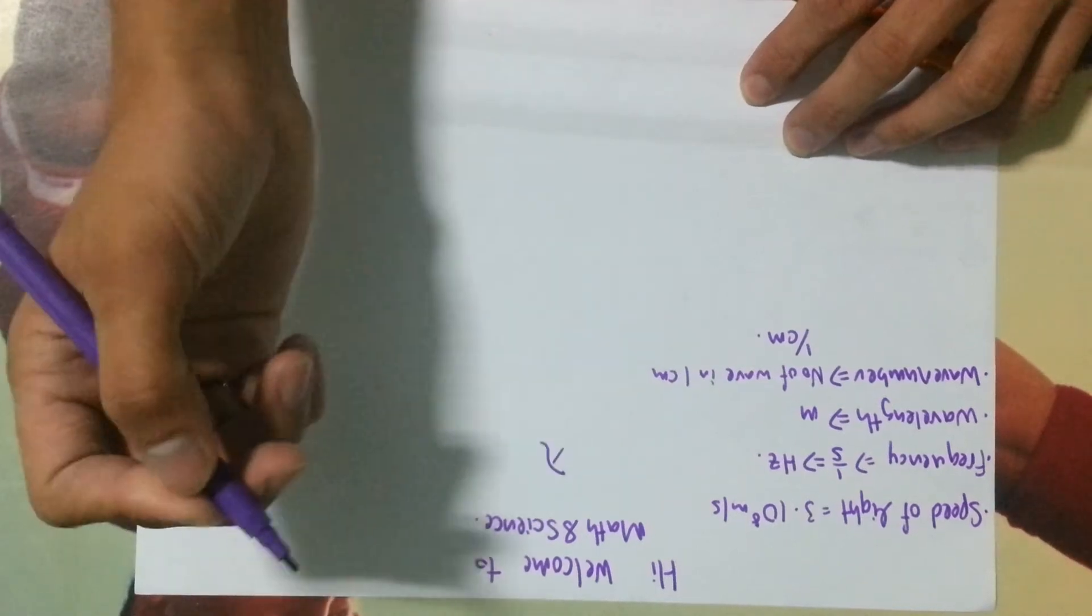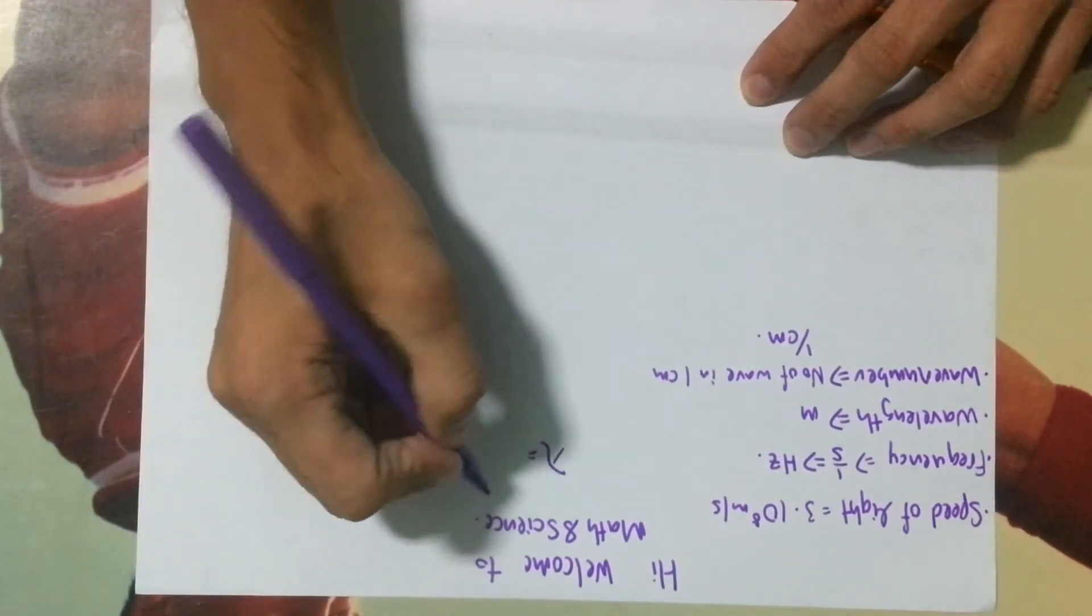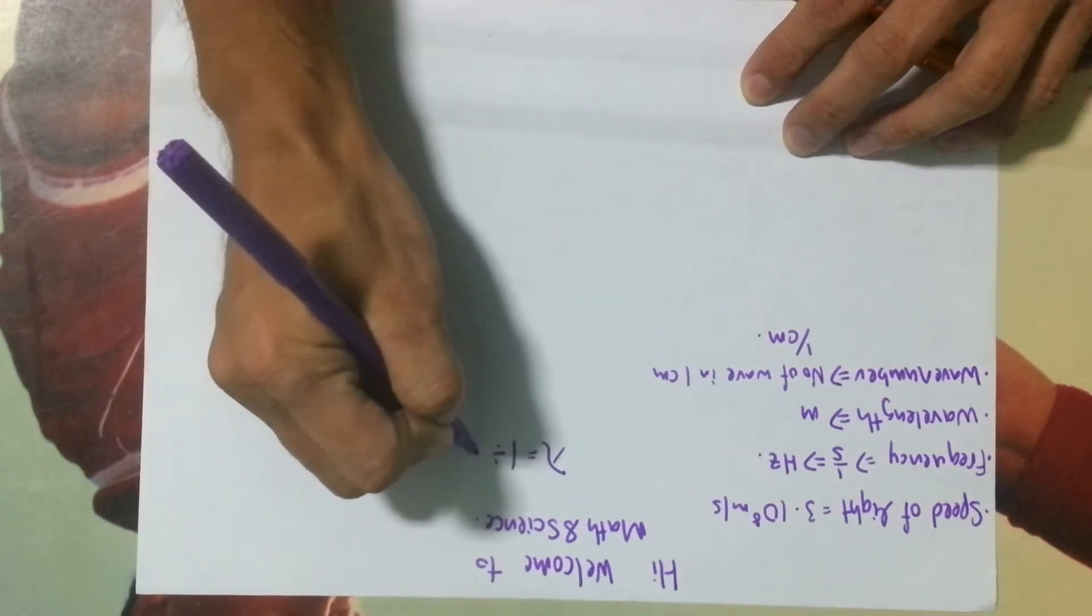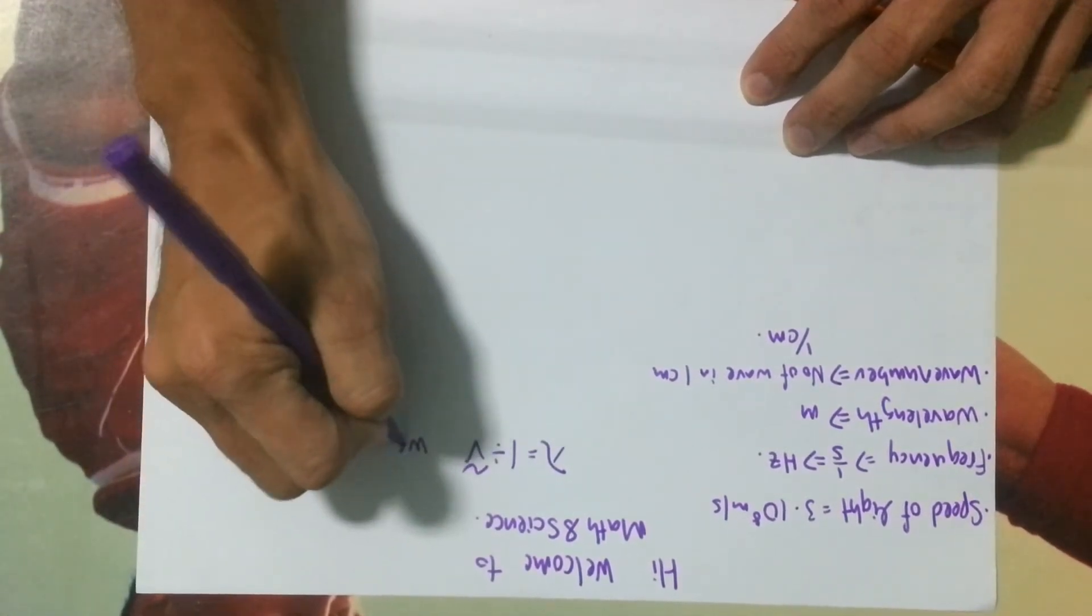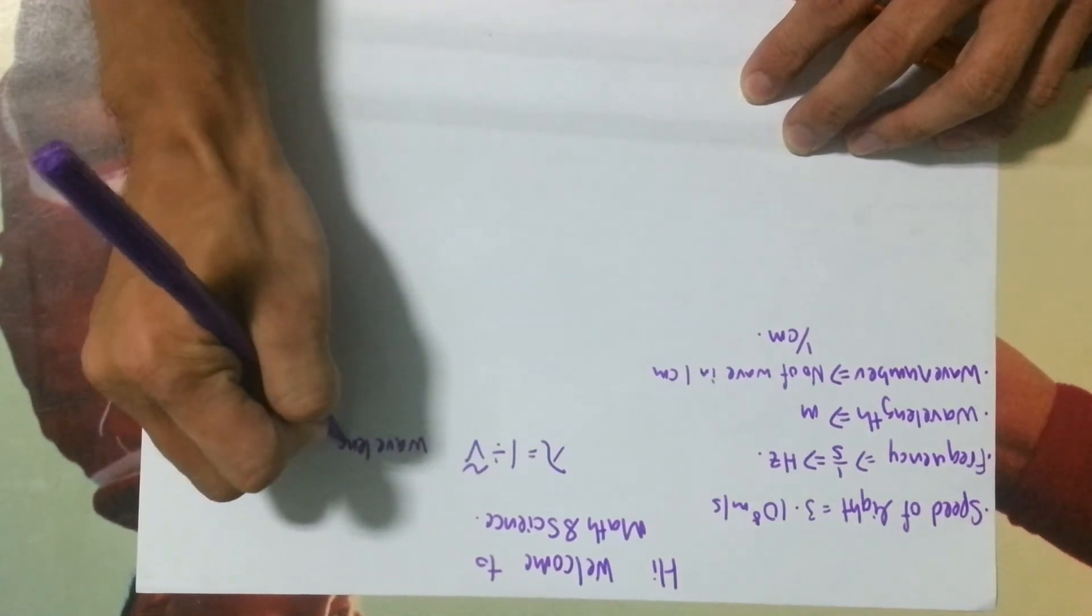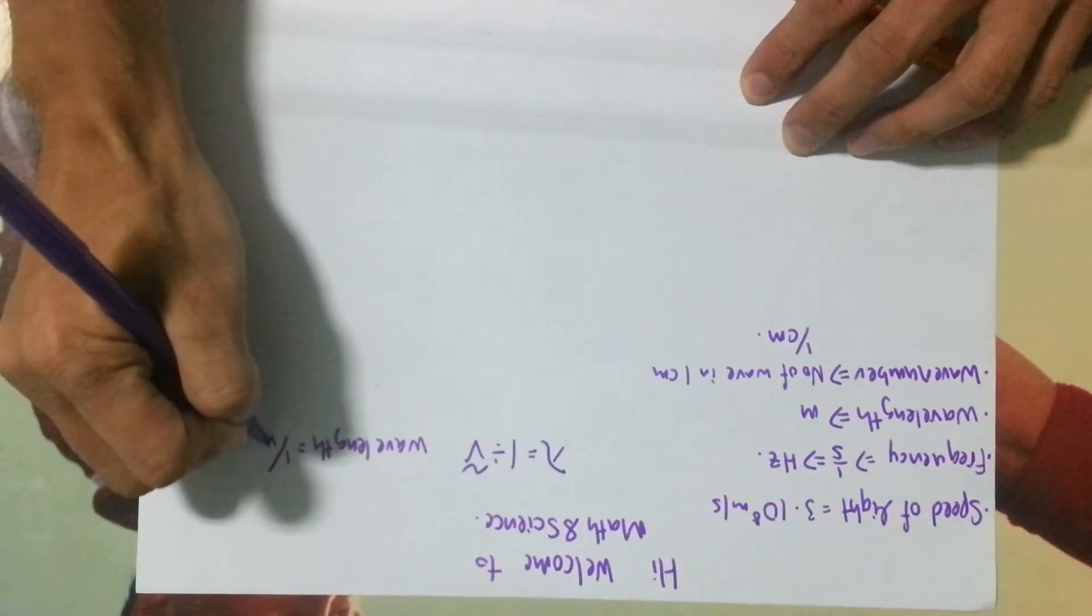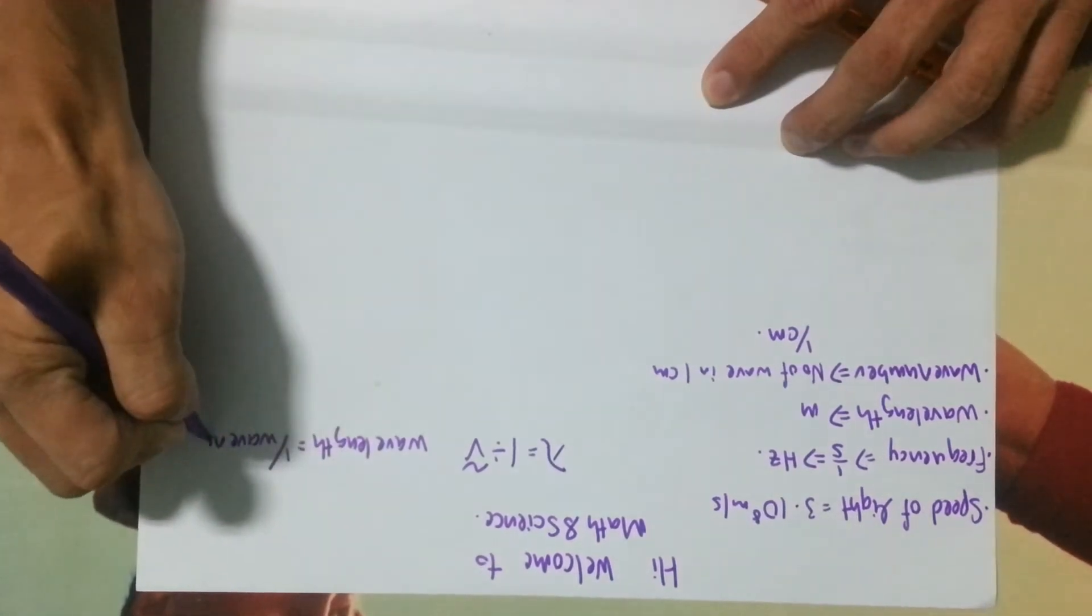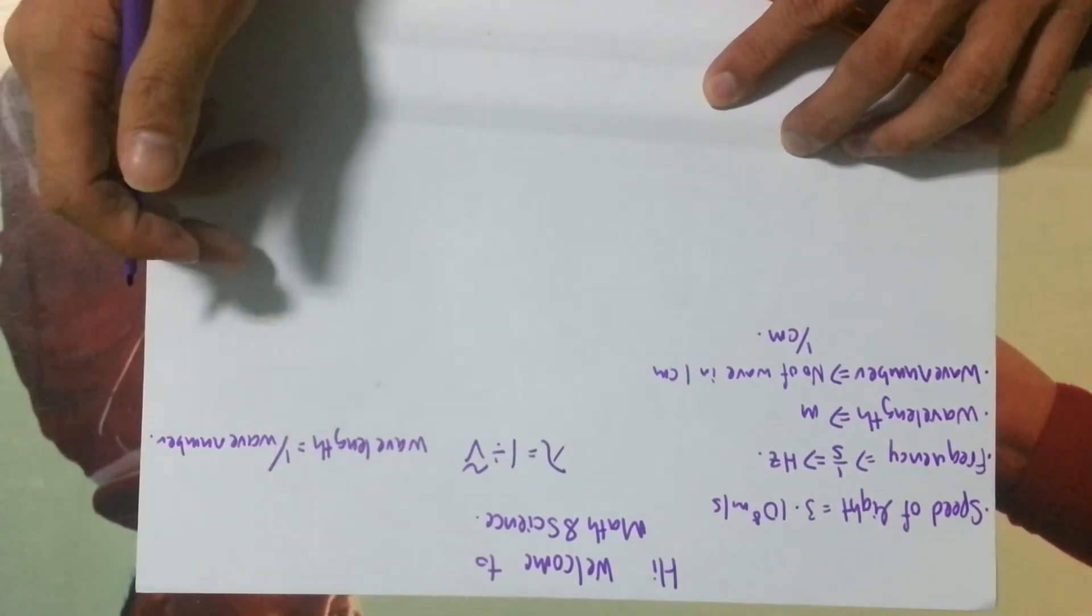Just very easy. Plug in the formula. Wavelength is equal to 1 divided by wave number. Wavelength is equal to 1 per wave number.